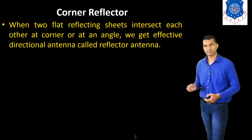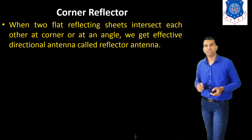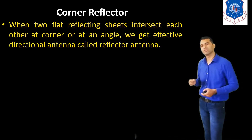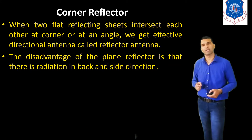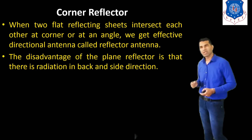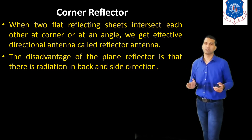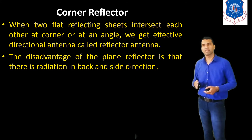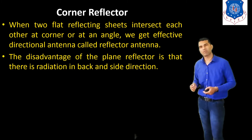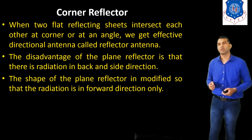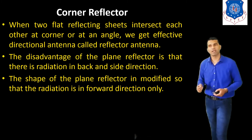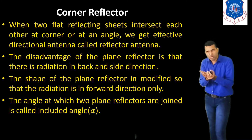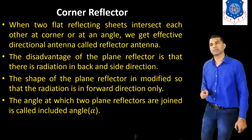Now we discuss about the corner reflector. When two flat reflecting sheets intersect each other at a corner or at an angle, we get an effective directional antenna known as the corner reflector antenna. The disadvantage of the plane reflector is that there is radiation in the back and side direction. To reduce this backward and side radiation, we use the corner reflector. The shape of the plane reflector is modified so that radiation occurs in the forward direction only. The angle at which two plane reflectors are joined is called the included angle, denoted by alpha.